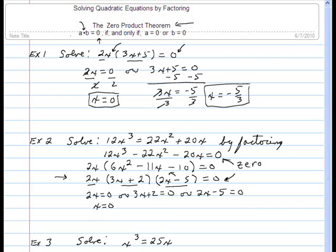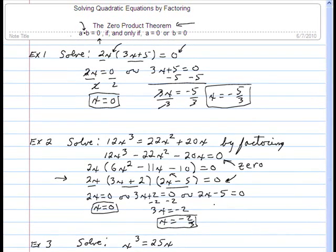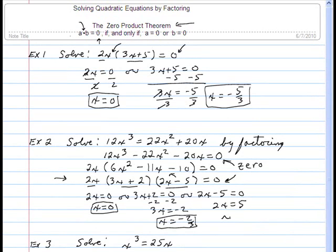Well, if 2x is zero, the only way that could happen is for x to be zero. When I go to this second one, if I subtract 2 from both sides, I get 3x equals negative 2, x equals negative 2 thirds. There's my second answer. If I go to the third one, I get 2x equals 5, x equals 5 halves. So this particular problem had 3 solutions, and notice its degree was 3 also. That's more than a coincidence.